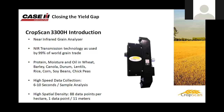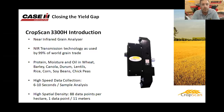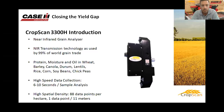The CropScan 3300H on-combine grain analyzer is a near-infrared grain analyzer. NIR grain analyzers are used throughout the world for trading grain — they measure protein, moisture, and oil in wheat, barley, canola, durum, lentils, rice, corn, soybeans, and chickpeas. It doesn't matter where in the world you go, they use these transmission NIR grain analyzers to measure grain at the elevator or the silo.